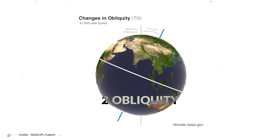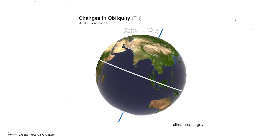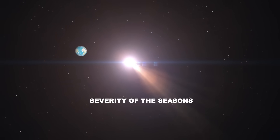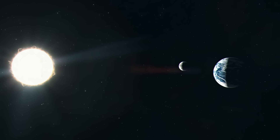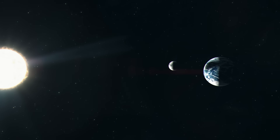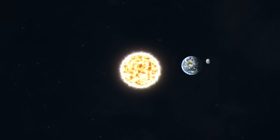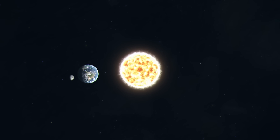2. Obliquity. Obliquity refers to the angle of inclination of the Earth's axis concerning its orbital plane and varies between 22.1 degrees and 24.5 degrees over a cycle of about 41,000 years. This angle determines the severity of the seasons. A higher tilt angle causes colder winters and warmer summers in both hemispheres, while a smaller angle reduces this seasonal difference. Obliquity directly impacts the distribution of insolation, especially at high latitudes, and thus on the formation of glaciers.